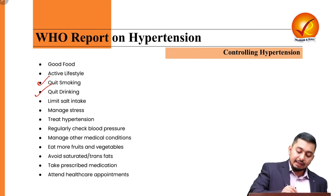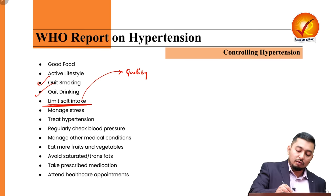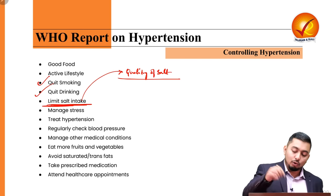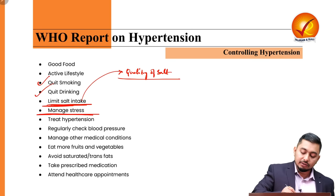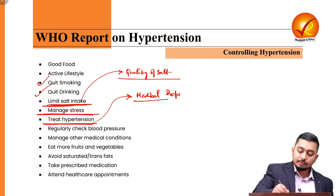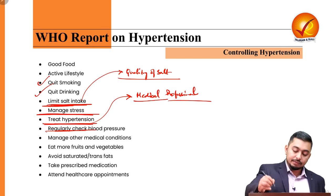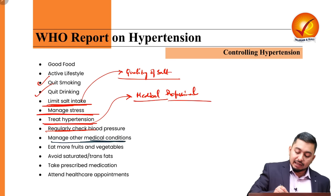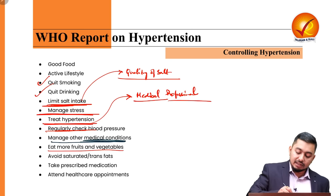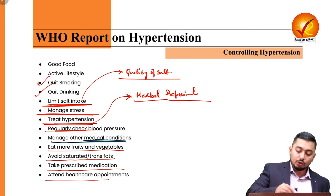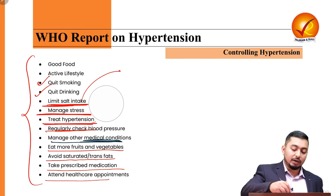Quitting drinking, quitting smoking, and limiting salt intake while improving the quality of salt are recommended. Stress management, treatment through medication from medical professionals, and regular blood pressure checkups are also important. Managing other medical conditions is necessary to avoid a cascading effect. Eating more fruits and vegetables, avoiding saturated and trans fats, taking prescribed medication, and attending to healthcare professionals and taking their advice seriously are all essential steps.